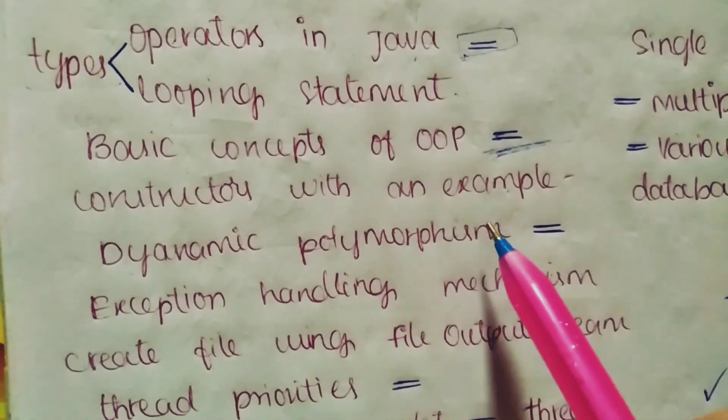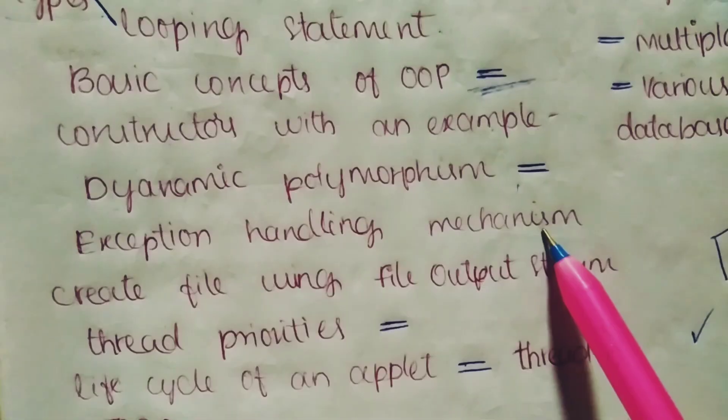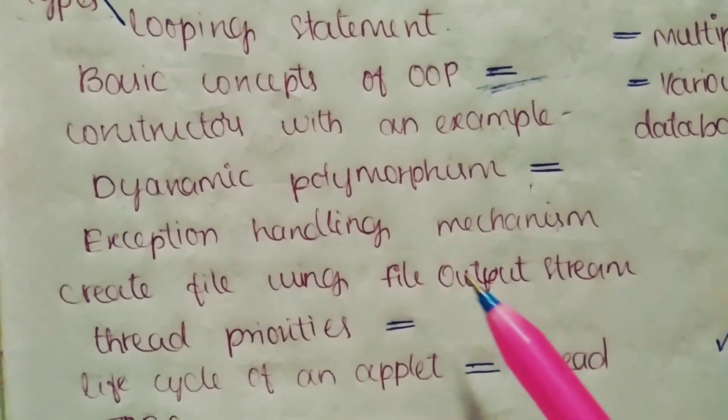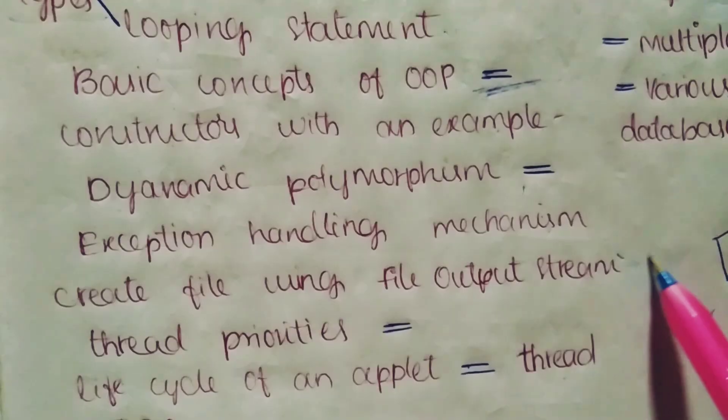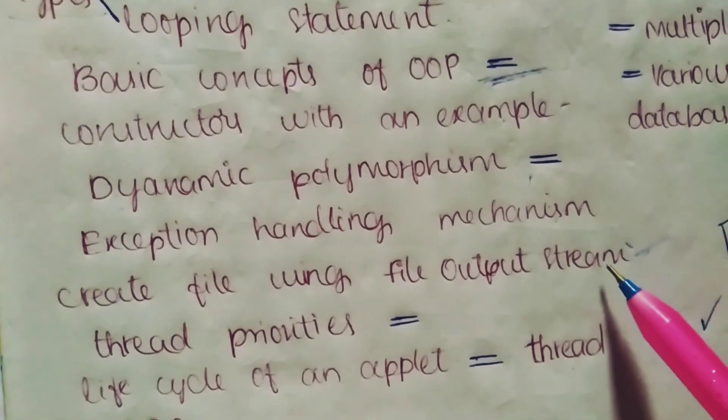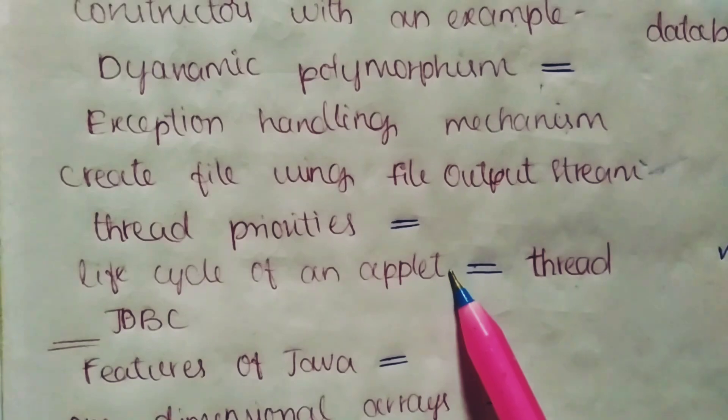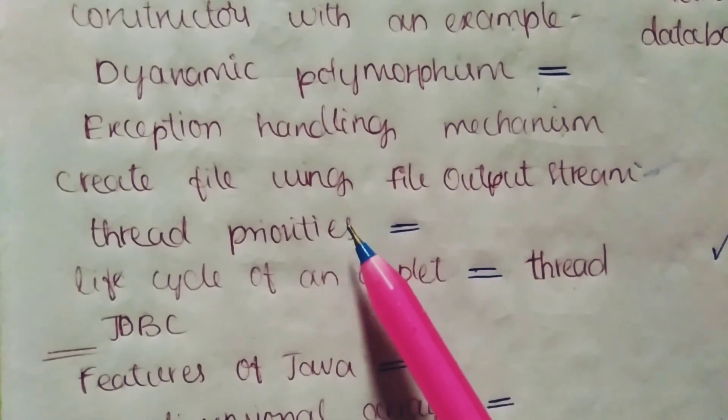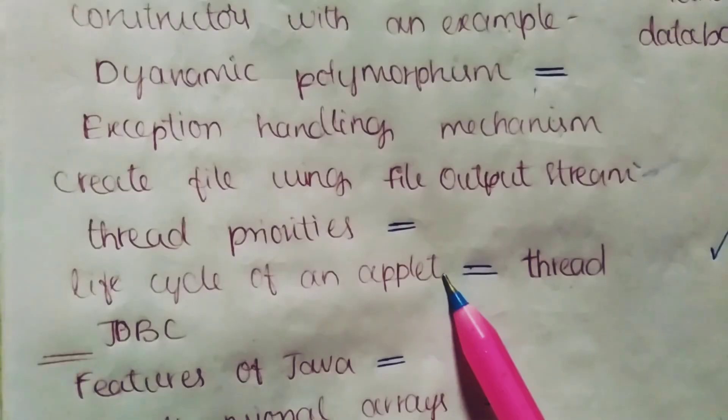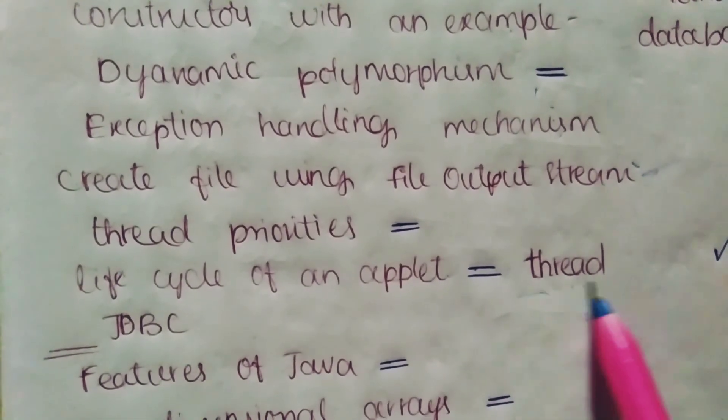Dynamic polymorphism, most important question. Exception handling mechanism. Create file using file output stream - this will definitely be asked, asked in shorts, this is also common in essays. And thread priorities, life cycle of an applet. This is also a most important question. Thread priorities important, life cycle of an applet. This is important, life cycle of a thread.